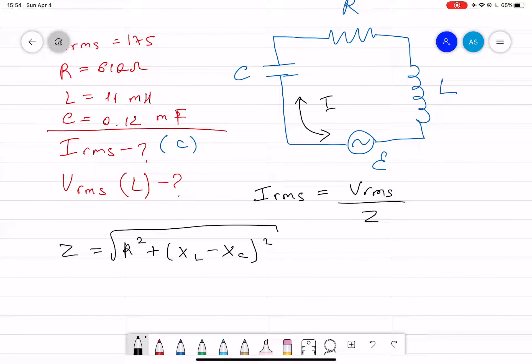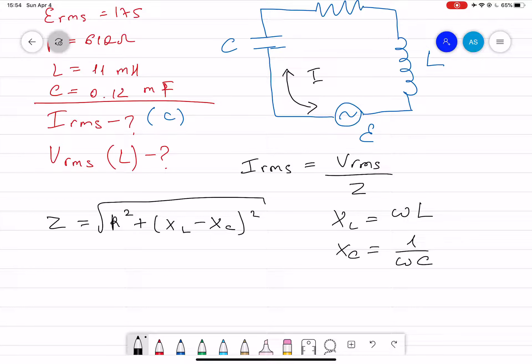We have LC, so how can we find X_L and X_C? X_L is equal to omega L, and X_C is equal to one over omega C. We also have another formula: omega is equal to one over the square root of LC.